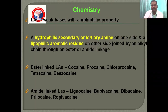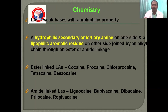Looking at the chemistry, local anaesthetics are weak bases with lipophilic properties. They have a hydrophilic secondary or tertiary amine on one side, a lipophilic aromatic residue on the other side, joined by an alkyl chain through an ester or amide linkage. Ester-linked local anaesthetics include procaine, cocaine, and chloroprocaine. Amide groups include lignocaine, mepivacaine, dibucaine, and prilocaine.